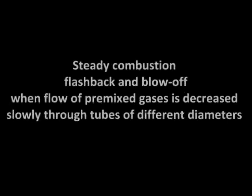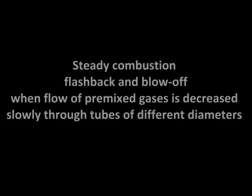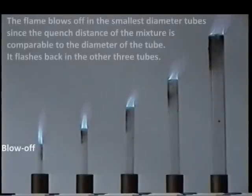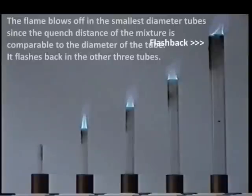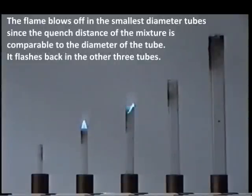Steady combustion, flashback, and blow-off occur when the flow of premixed gases is decreased slowly through tubes of different diameters. The flame blows off in the smallest diameter tubes since the quench distance of the mixture is comparable to the diameter of the tube. It flashes back in the other three tubes.